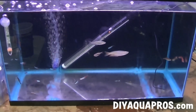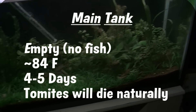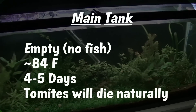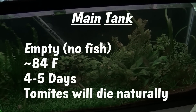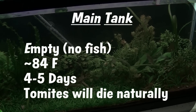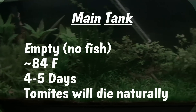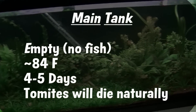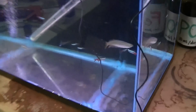Now with your main tank empty, you have a few advantages. All you have to do is crank the temperature up to about 82 to 84 degrees Fahrenheit and wait about 4 to 5 days to clear the parasite. The tomonts hiding in your tank will be most active at this temperature, quickly bursting and releasing the infectious tomites. Without any definitive host around, these guys will die in about 48 hours, and your tank will be more or less parasite-free.